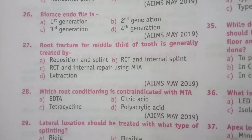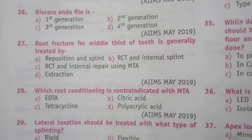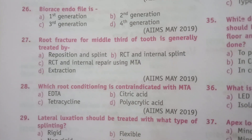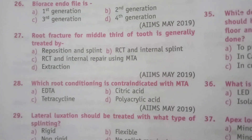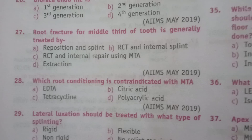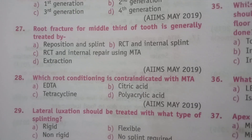Next question: which root conditioning agent is contraindicated with MTA? Options: EDTA, citric acid, tetracycline, polyacrylic acid. The answer is A, EDTA.